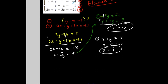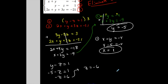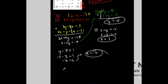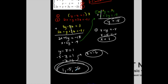Now I have x and y, so I find z using equation 2: y − z = 1. With y = −5: −5 − z = 1, so −z = 6, giving z = −6. My ordered triple is (1, −5, −6). Checking: equation 1 gives 1 − 5 = −4 ✓; equation 2 gives −5 − (−6) = 1 ✓; equation 3 gives 2(1) + (−5) + 3(−6) = 2 − 5 − 18 = −21 ✓. So this is my solution.